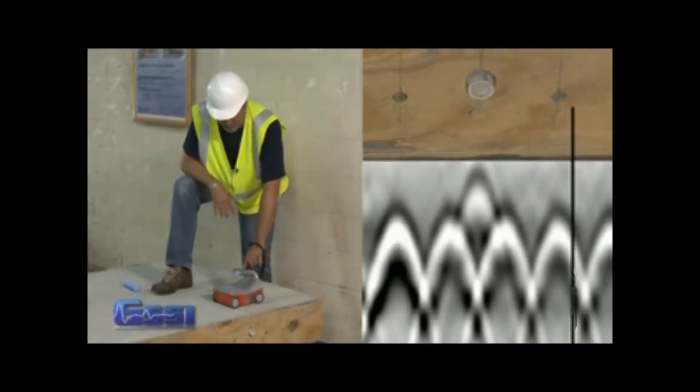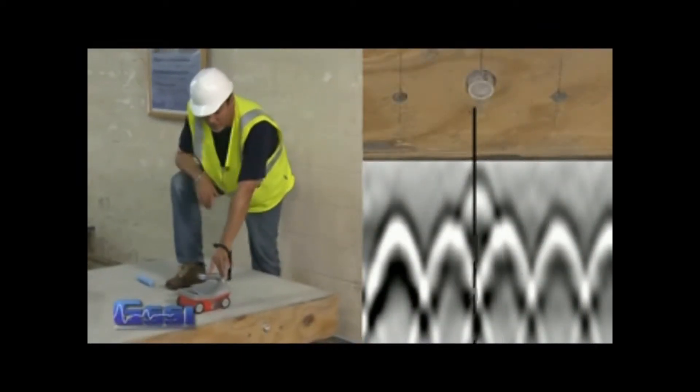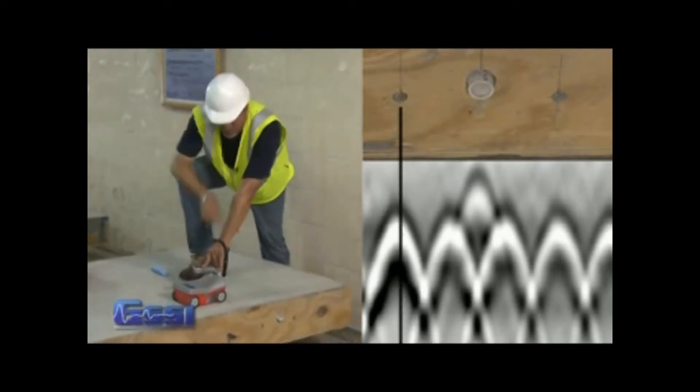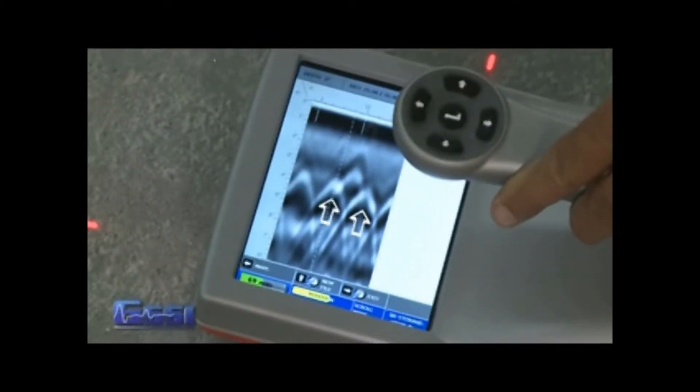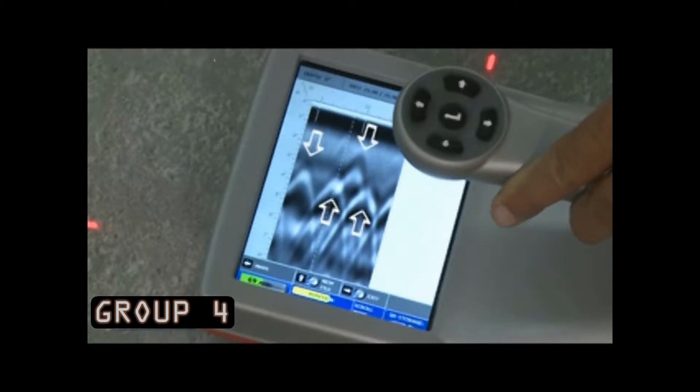Here is an example of objects or targets underground and how the data will be displayed in real-time. As you collect the data, note the hyperbolas are upside-down U-shapes when targets are crossed at 90 degrees.